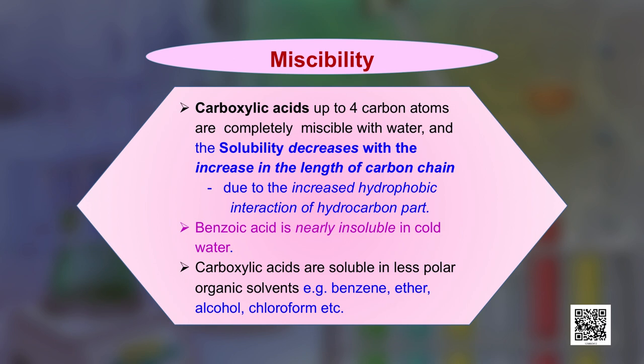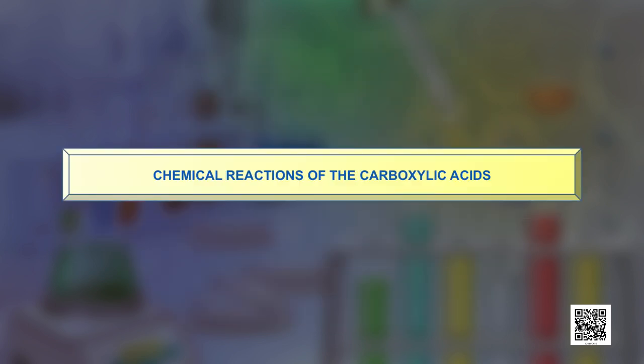After understanding the physical properties, let us understand the chemical reactions of carboxylic acids. We can categorize the reactions into different groups, focusing on the -COOH group. The first reactions belong to the cleavage of the O-H bond in the carboxyl group, and the first reaction here is the acidity of carboxylic acids.